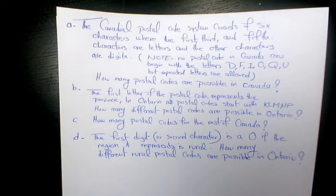And we need to know that no postal code in Canada can begin with the letters D, F, I, O, Q, and U, but repeated letters are allowed.